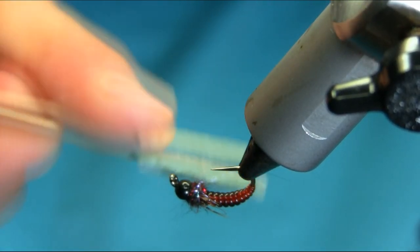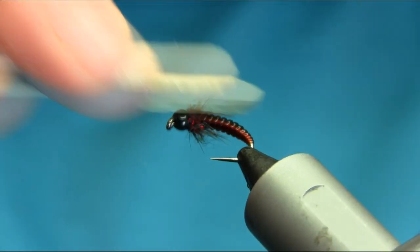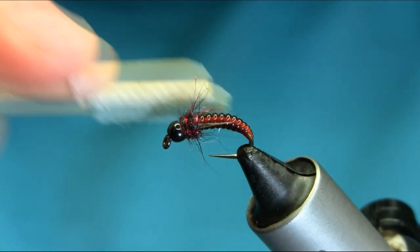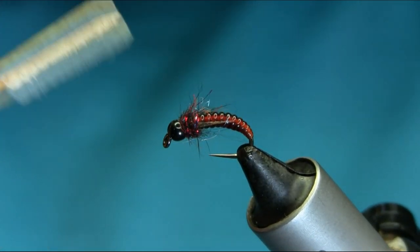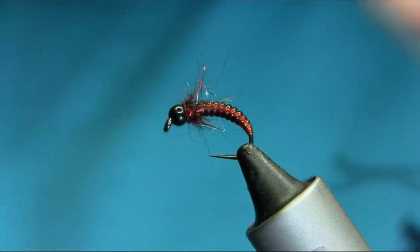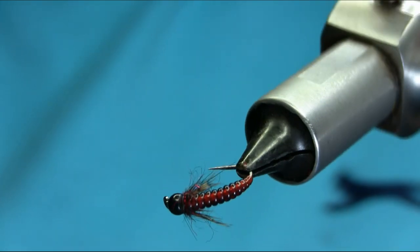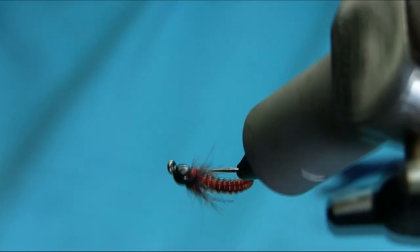I'm just going to release some of those fibers to make a nice fluffy head. So there you have a brown partridge larva. I hope you enjoyed this video. Thanks for watching.